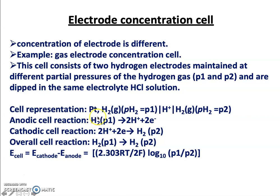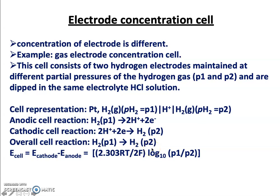In the cell representation, we have a platinum electrode as the hydrogen electrode, with hydrogen gas at partial pressure P1 at one end and hydrogen gas at partial pressure P2 at the other. The anodic cell reaction involves a loss of electrons (oxidation), and the cathodic cell reaction involves a gain of electrons (reduction). The overall cell reaction is the transfer of hydrogen gas from partial pressure P1 to partial pressure P2.